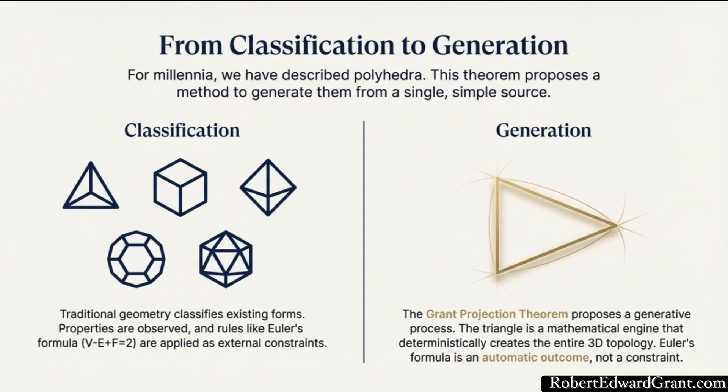Historically, the approach has always been observational. We find a shape, we count its vertices, its edges, its faces. We classify the geometry after the fact. But this new mathematical framework, the Grant Projection Theorem, completely inverts that whole process. It says you don't find the shapes, you generate them. And the starting point for this entire universe of three-dimensional complexity is just a simple two-dimensional right triangle.